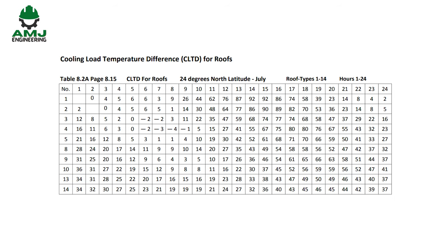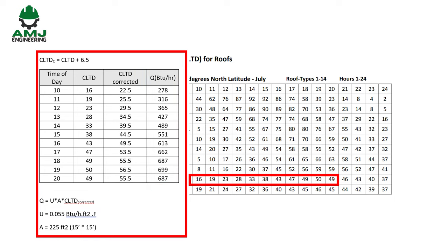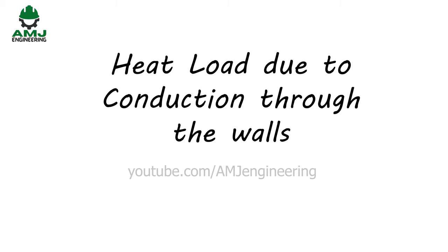I will do the load calculations from 10 a.m. to 8 p.m. because the peak load will occur within this range. After calculating CLTD_corrected, the heat gain through the roof at different hours is easily calculated on an Excel sheet using Q = U × Area × CLTD_corrected, with the roof area considered for one room.